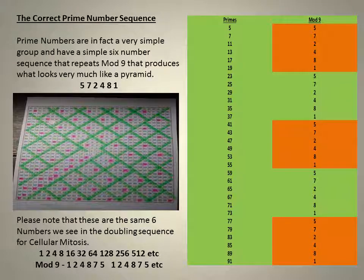So here we have the correct prime number sequence. Prime numbers are, in fact, a very simple group, and have a simple six-number sequence that repeats mod nine that produces a pyramid. Please note that these are the same six numbers we see in the doubling sequence for cellular mitosis. 1, 2, 4, 8, 16, 32, 64, 128, 256, 512.